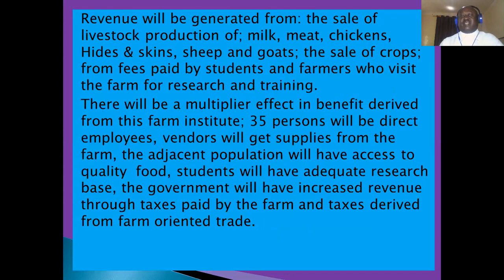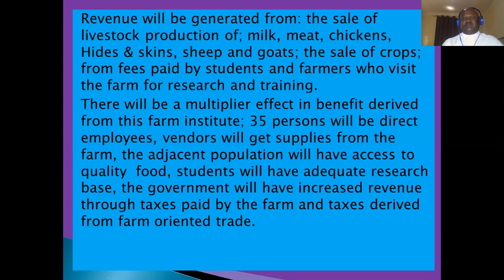Revenue will be generated from the sale of livestock, production of meat, chickens, sheep and goats, and the sale of crops. Fees will be paid by students and farmers who visit the farm for research and training. There will be a multiplier effect: 35 persons will be direct employees, vendors will get supplies from the farm, the adjacent population will have access to quality food, students will have an adequate research base, and the government will have increased revenue through taxes from the farm and farm-oriented trade.